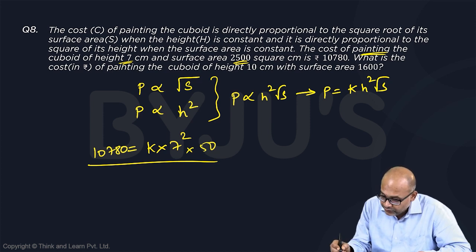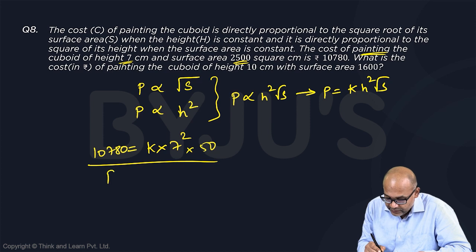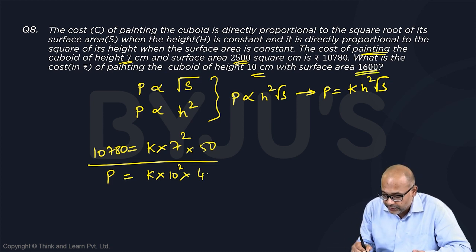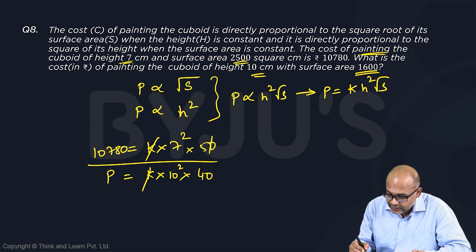What is the cost? So I need to find the cost. This is the price that I want times k, which I don't know. Now the height is 10, so 10² times surface area is 1600, so root of 1600 is 40. K will get cancelled, zeros will get cancelled.